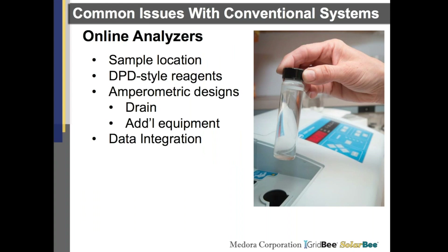With online analyzers, there's more to them than a simple flow cell and sample collection. Sample location is also important, whether fixed or optimized for the specific tank. DPD styles require reagents that need replenishment as well as disposal. And even amperometric designs still require some form of drain, which oftentimes may necessitate additional equipment such as a tank, pump, and possibly a separate controller to reintroduce that back into the process. And even after you have all that data available, you still need to integrate it into the larger control system and keep it accessible.